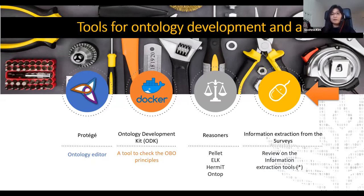Another tool I use is the reasoner. Since the ontology has a logical structure, we can use the reasoner to verify if the ontology is correct. I normally use the Pellet reasoner, which helps us verify our ontology is correct on the logical level. There are also information extraction tools. A 2017 paper covers many tools, but the issue is that our social economic surveys normally use Excel forms to create surveys using CAPI tools, so it's very hard to use existing tools in our domain — that's why we're developing our own tools.